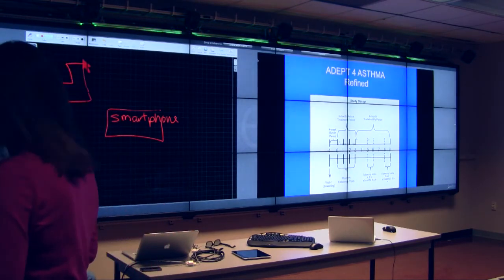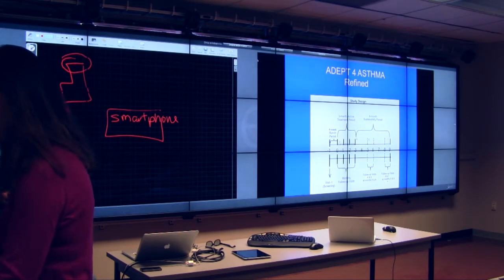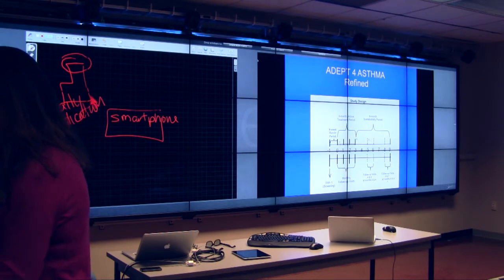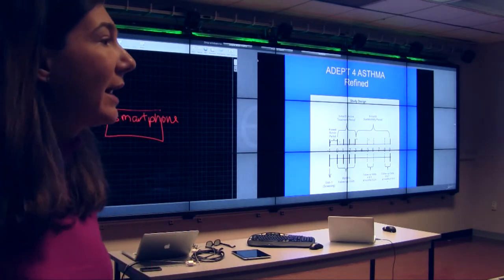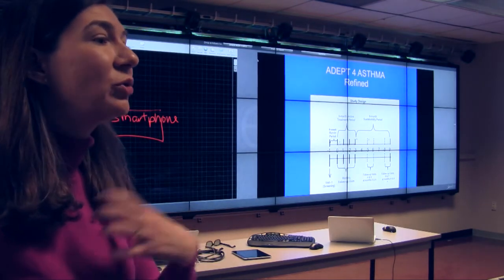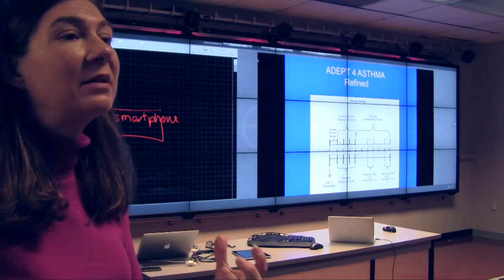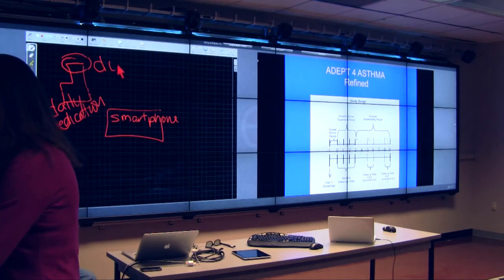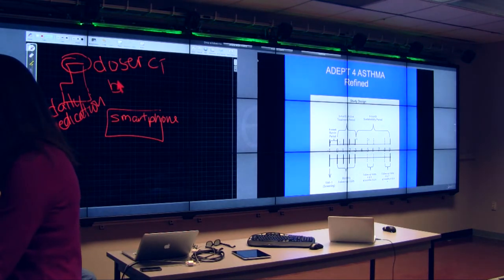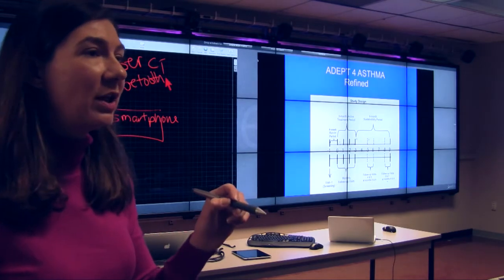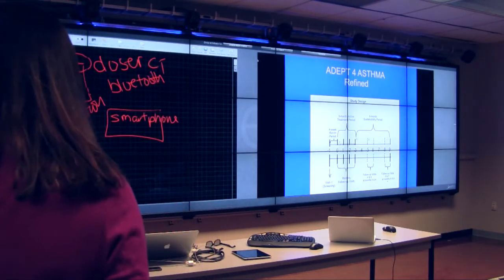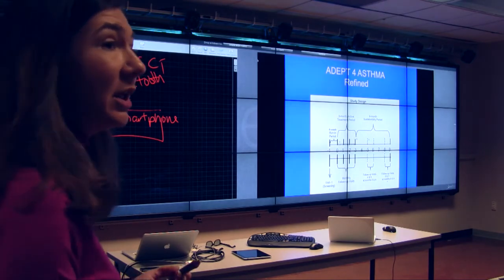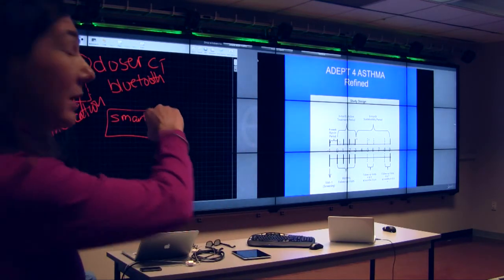We would like to have their daily medication. This daily controller medication is what keeps you from going into the emergency room or the hospital. It's an anti-inflammatory. So it treats the inflammation that is causing the asthma exacerbations. So we want to have this doser CT on here and we want to have Bluetooth. So every time they use their medication, the Bluetooth communicates from the doser CT to the smart phone that they use their medication in real time.